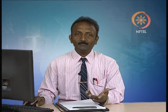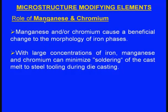Among the microstructure modifying elements, manganese and chromium cause a beneficial change to the morphology of iron phases. With large concentrations of iron, manganese and chromium can minimize soldering of the cast melt to steel tooling during die casting. In die casting applications there is a drawback called soldering — the molten metal sticks to the metallic dies. This problem can be minimized when we use these modifying elements like manganese and chromium.